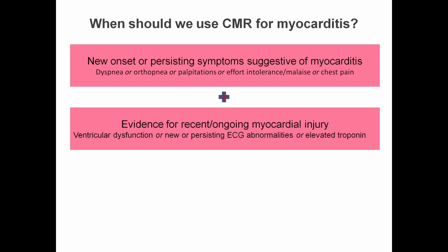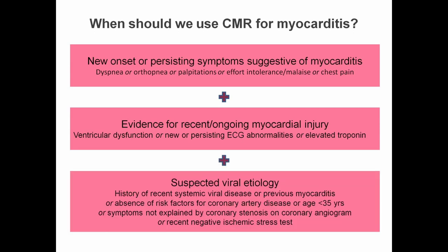In addition, there needs to be evidence for recent or ongoing myocardial injury — in other words, evidence of ventricular dysfunction, or new or persisting ECG abnormalities, or an elevated troponin. In addition, we need a suspected viral etiology.